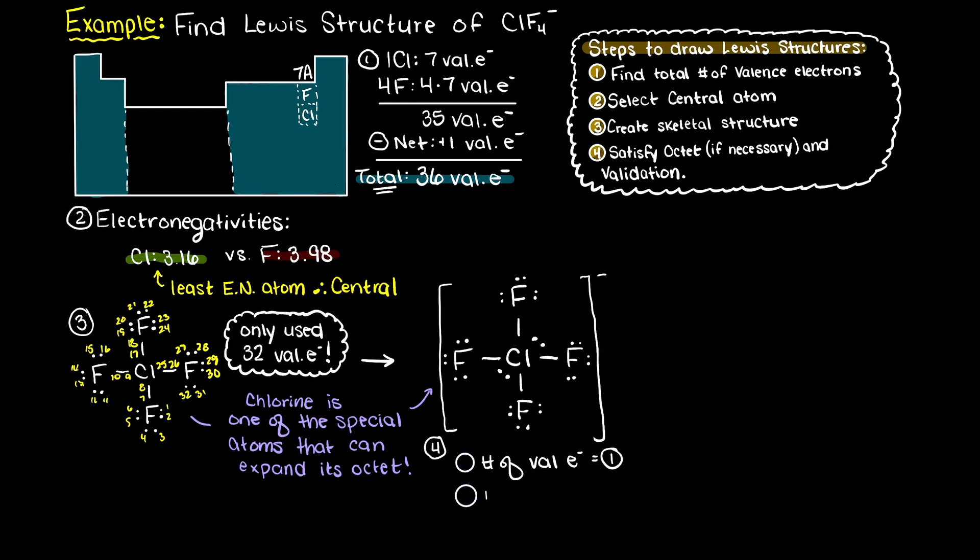So both of our conditions of validation are now met as we are using 36 valence electrons, and all the fluorine atoms are satisfied by the octet rule, and as we said chlorine is just using an expanded octet, so it is also satisfied.